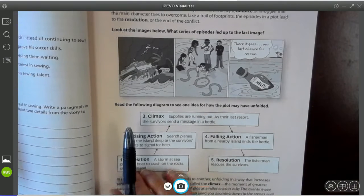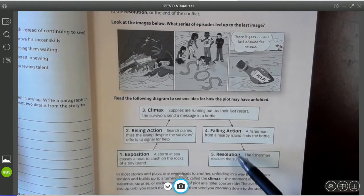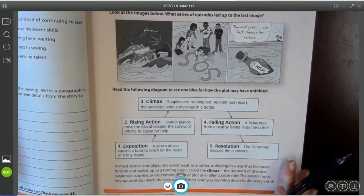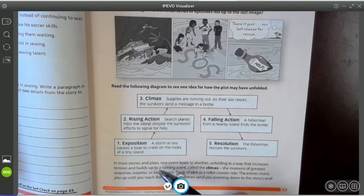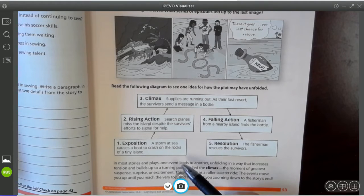So let's take a look at how this is like a little plot mountain. I'm sure you've heard of a plot mountain before. We start off with number one, an exposition. An exposition introduces the characters in the setting and it sets the stage for what's going to happen. So in this particular case, a storm at sea causes a boat to crash on the rocks on a tiny island.